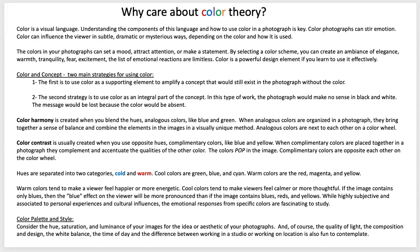Color harmony is created when you blend analogous hues, like blue and green. When analogous colors are organized in a photograph, they bring together a sense of balance and combine the elements in the image in a visually unique method. Analogous colors are next to each other on the color wheel. I'm going to show you a bunch of examples of images created with this concept of color harmony.